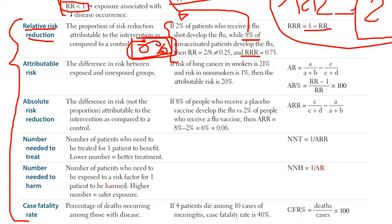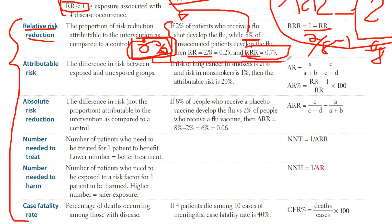The relative risk here is two over eight. You do one minus two-eighths and you get six-eighths, which is three-fourths. That's how they got that number. This number is essentially saying the same thing as the raw percentage decrease, just reported differently as a relative risk reduction — it's more focused on the relative risk rather than the actual percentage.